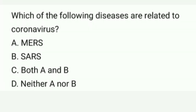Which of the following diseases are related to coronavirus? Options are: A. MERS, B. SARS, C. Both A and B, D. Neither A nor B. Correct option is C. Both A and B.